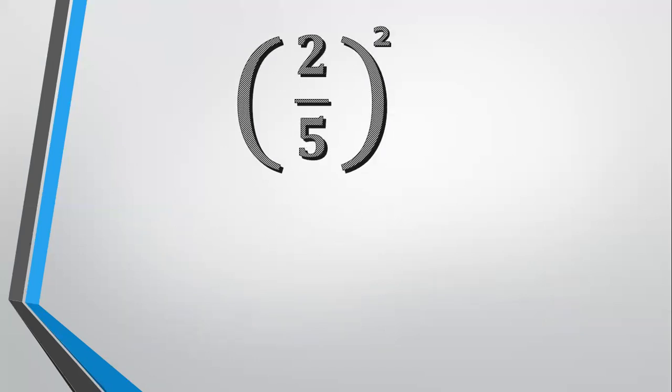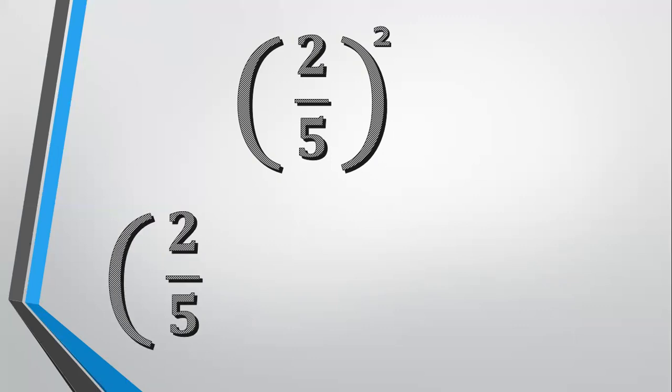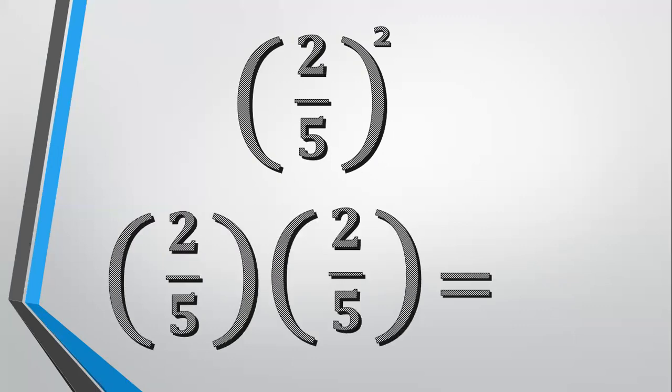2 fifths squared means 2 fifths times 2 fifths. 2 times 2 equals 4 and 5 times 5 equals 25, so the answer is 4 twenty-fifths.